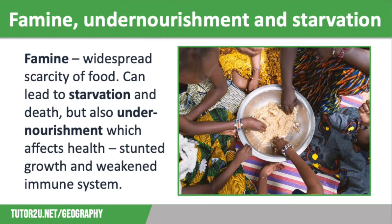This has numerous impacts. The first one we are going to discuss is famine, undernourishment and starvation. Regions suffering from food insecurity do not have enough food, and in some cases this leads to famine, which is widespread scarcity of food. In extreme cases, famine can result in starvation and death, but more commonly it will lead to undernourishment or undernutrition, where people are not eating enough food to continue to be in good health.